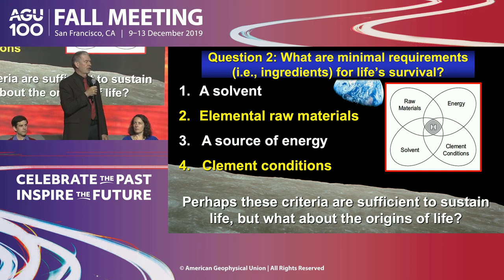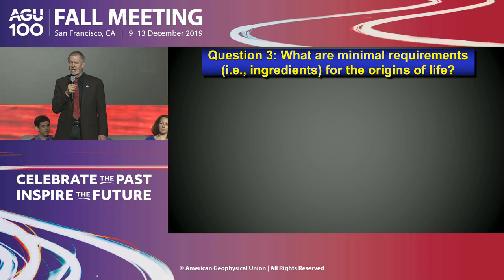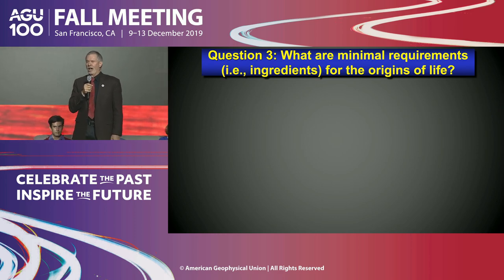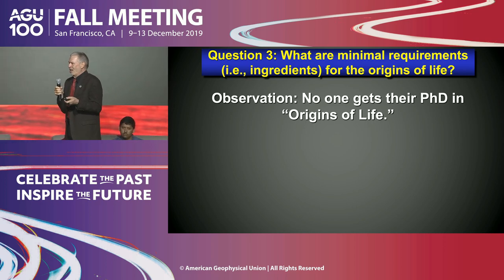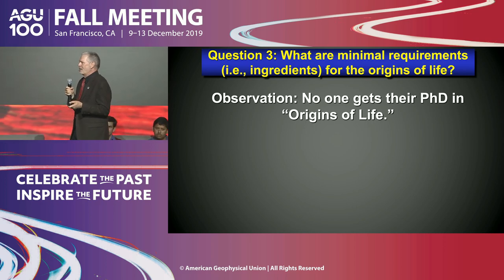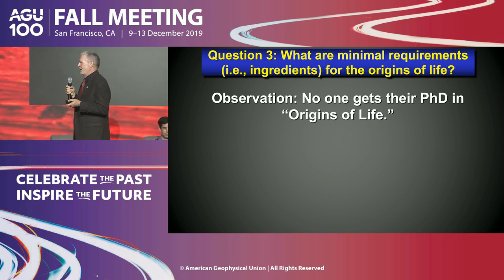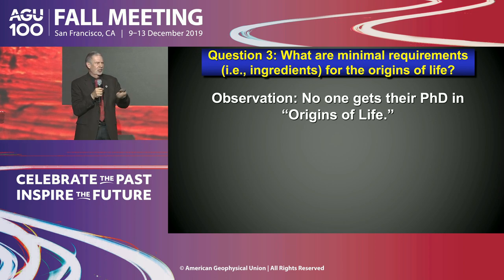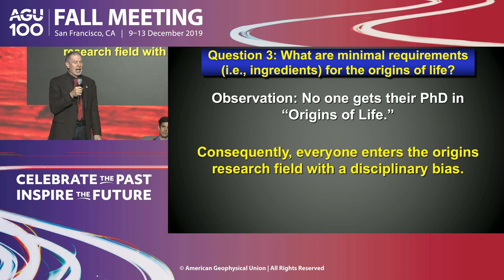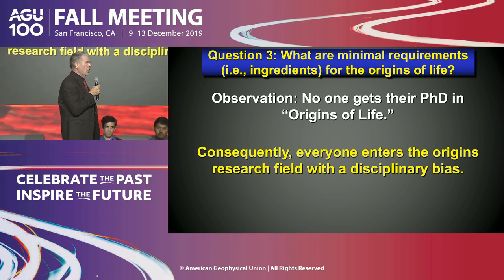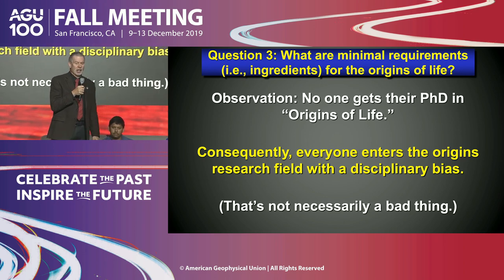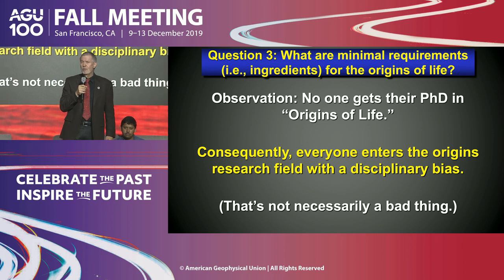But I don't think they're sufficient for the origin of life. Taking a philosophical aside: no one gets a PhD in origin of life — you get one in chemistry, physics, geology, or some other field. As a consequence, everyone who enters this field has their own biases, especially about what constitutes ingredients for life. It's not necessarily a bad thing, but it's something you need to recognize.